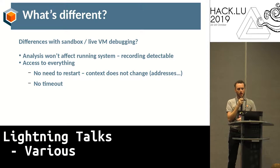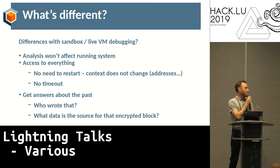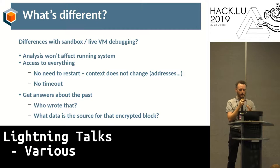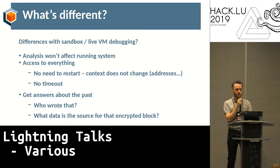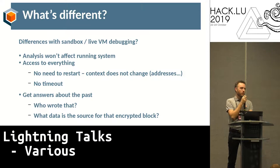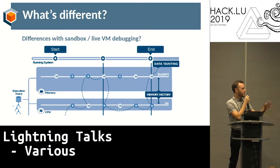The contexts don't change, the addresses don't change, nothing changes. What's really interesting is that you can get answers about what happened in the past from a certain moment you're interested in — who wrote that, or who reset that pointer, or these kinds of things. And you can link data, like encrypted blocks, back to the non-encrypted block. Basically, you get a trace and tools on top of it so that you can connect moments of that trace.